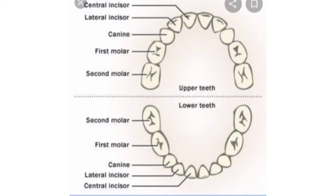The front teeth which help us in cutting or biting the food are called incisors. There are four incisors in each jaw. Next to each incisor, there is one canine on each side, so there are two canines in each jaw. Canines help in tearing the food. The next two teeth on each side of the jaw are premolars; there are four premolars in each jaw, helpful in chewing and grinding the food. At the end, there are three molars on each side of the jaw, giving six molars in each jaw, which also help in chewing and grinding the food.